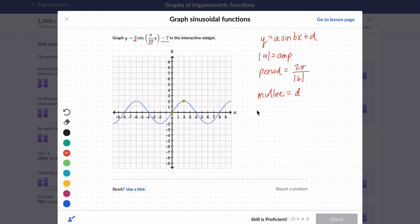So in our case, the amplitude is the absolute value of 2, so the amplitude is 2. I like to write this out as I go. It helps me along the way. b is pi over 10, so the period in our case is 2 pi divided by pi over 10, times 10 over pi. Right? So that means that these are going to cancel, and 2 times 10 is 20. So our period is 20, and the midline is negative 7.